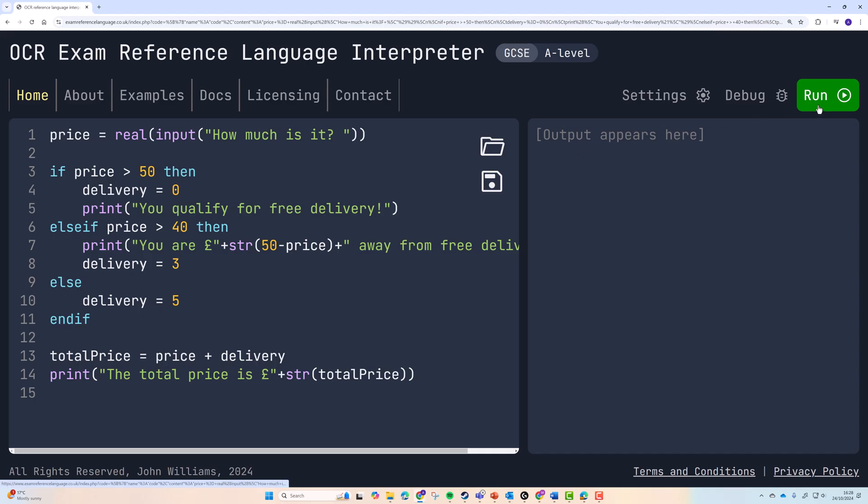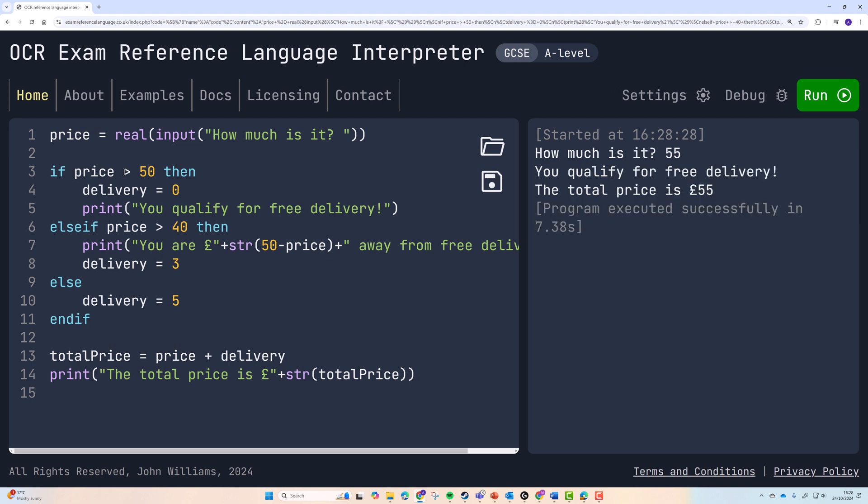And if I try this code and I run it, and let's type in a price bigger than fifty, say fifty-five, this should qualify me for free delivery in this program. So my delivery, my total price is fifty-five pounds itself. However, if I type in say forty-five pounds, I don't get free delivery. I have to pay three pounds for delivery, so I have to pay forty-eight pounds. And if I'm not really buying very much, I've only buying twelve pounds worth of items, I need to pay five pounds for my delivery.